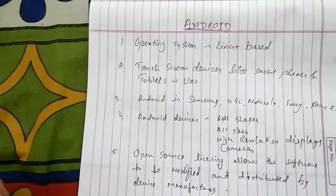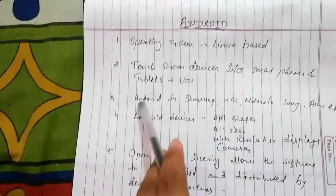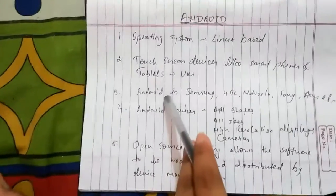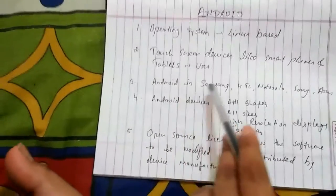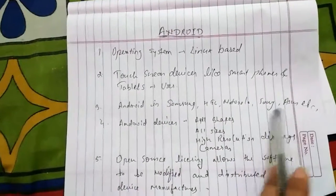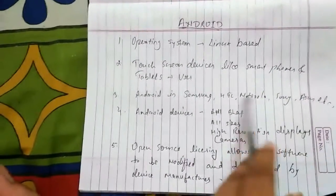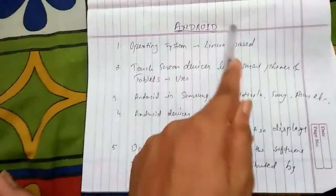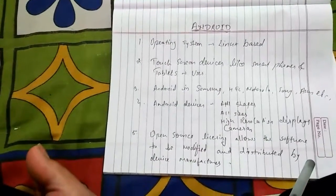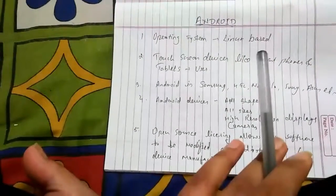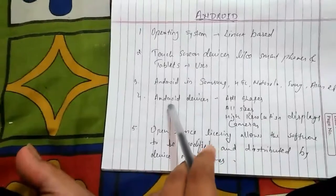The third point states that Android operating system is mostly used by a number of manufacturer companies — Samsung, HTC, Motorola, Sony, Asus, and others. All these companies are making their phones and tablets using the Android operating system, which is how those smartphones and tablets function.